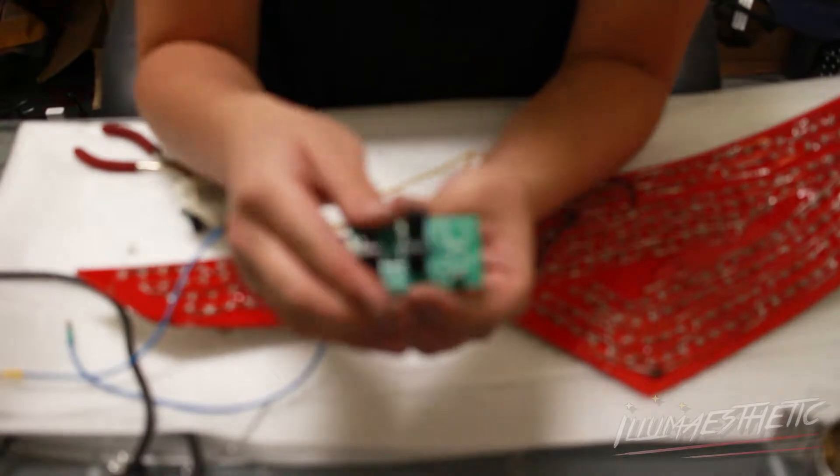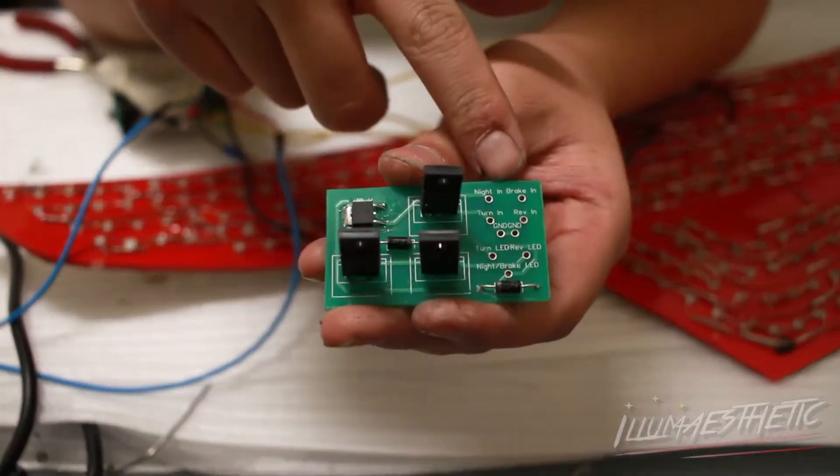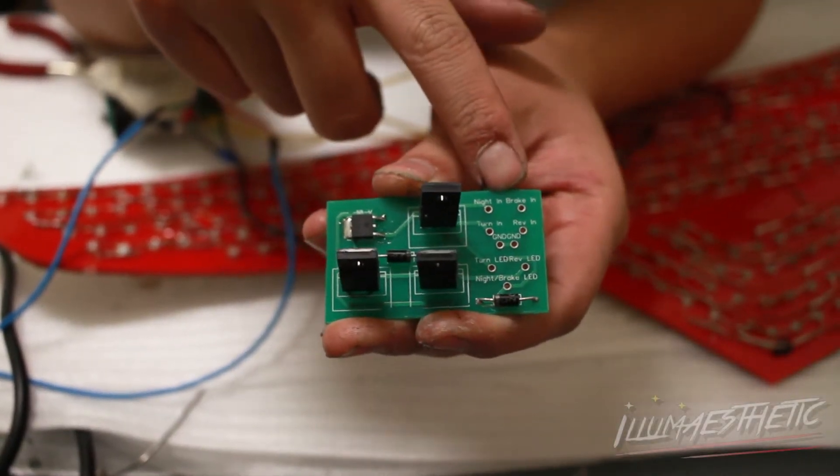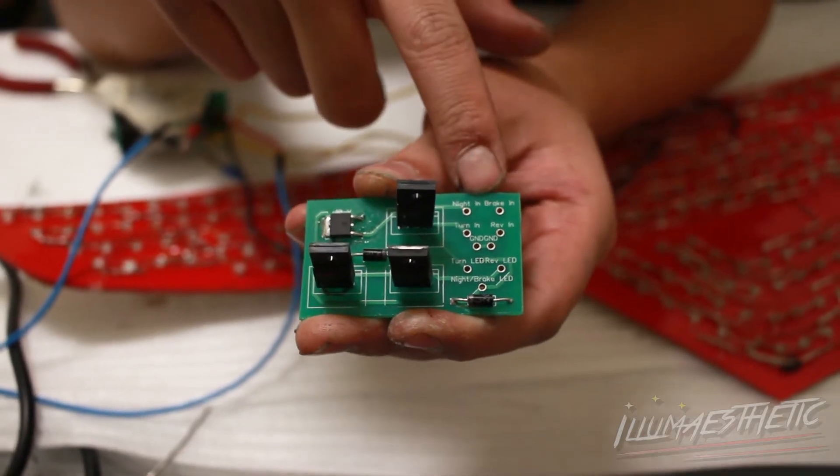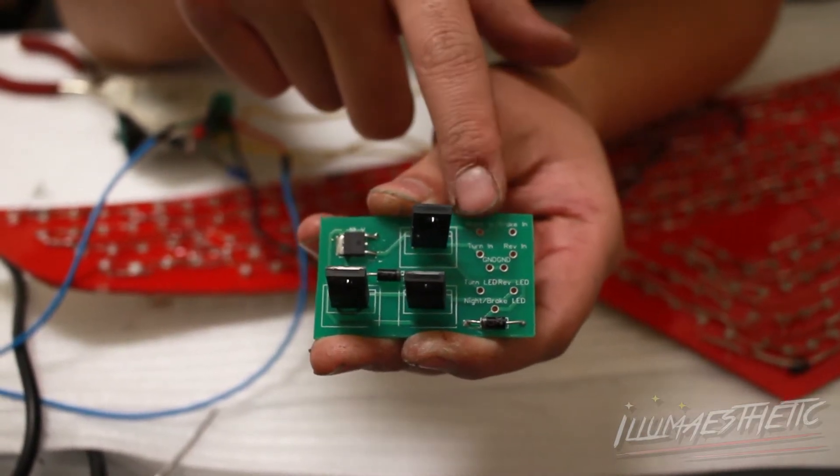So if you look closely, we're gonna have a total of nine inputs: nine in, brake in, turn in, reverse in, two grounds, turn LED, reverse LED, and night brake LED.